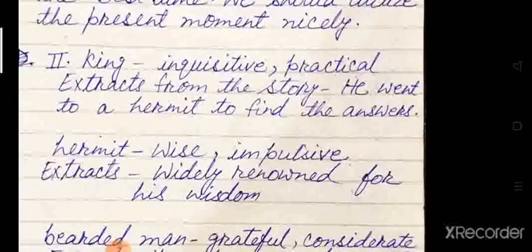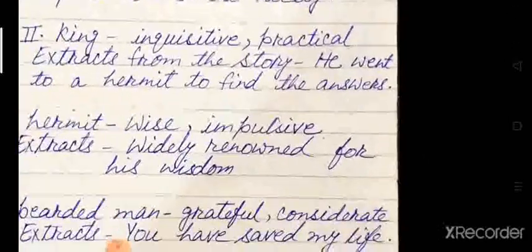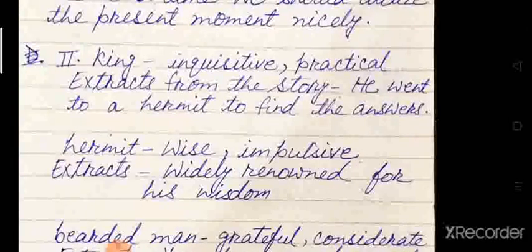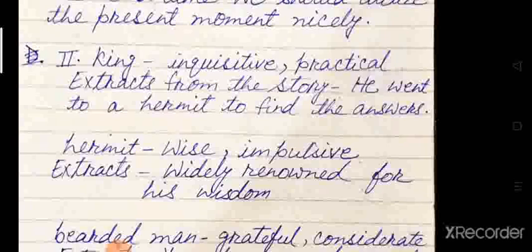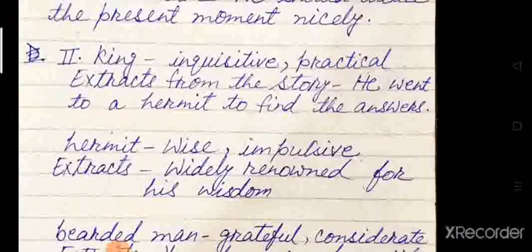Now number two — word power. You have to write some adjectives against king, hermit and bearded man. Six adjectives are given: inquisitive, wise, considerate, practical, impulsive and grateful. I have written two for each. Inquisitive means curious — the king was inquisitive because he wanted answers to his questions. Practical means that which can be put into practice. The king was also practical.